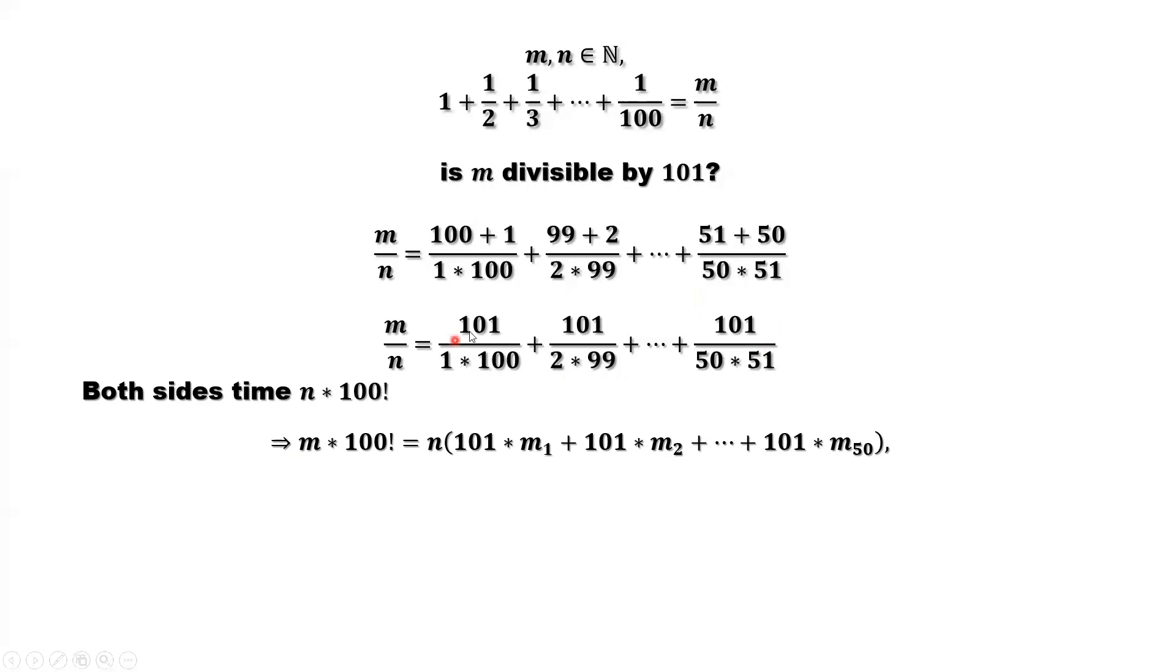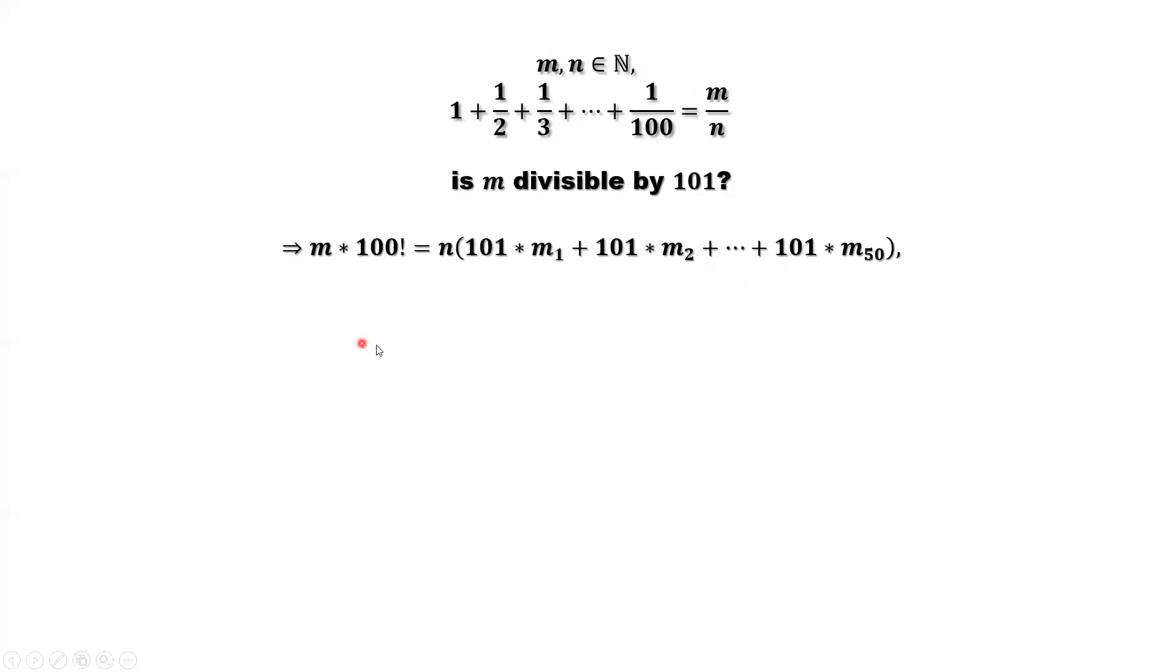According to this cancellation, we imply m times 100 factorial equals n times those sums. Certainly for sum m1, m2, until m50. Next thing, we can factor 101 out. The sum of the remaining part.